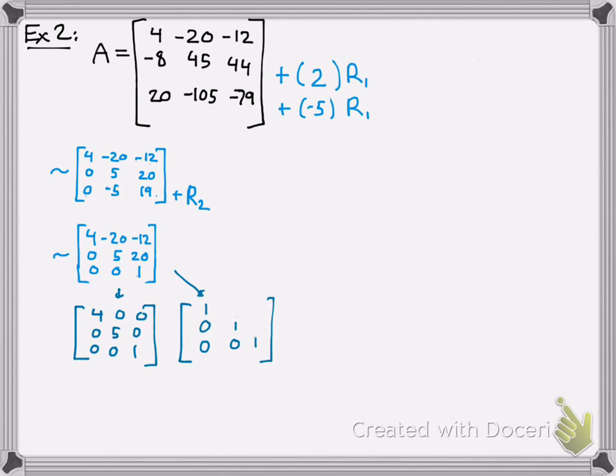So when you divide negative 20 divided by 4, that would give you 5. And then negative 12 divided by 4 would give you negative 3. And then the last one, 20 divided by 5 would give you 4. So that's how you get that upper triangular matrix there.